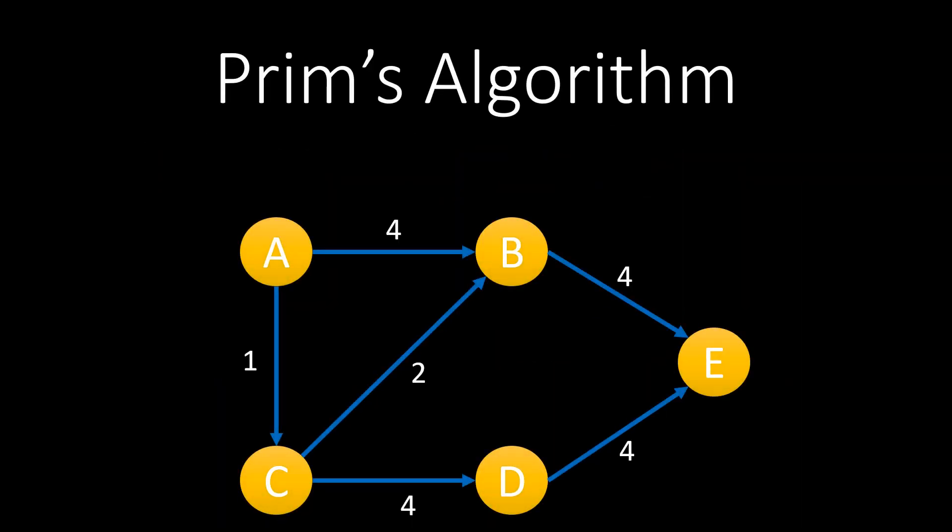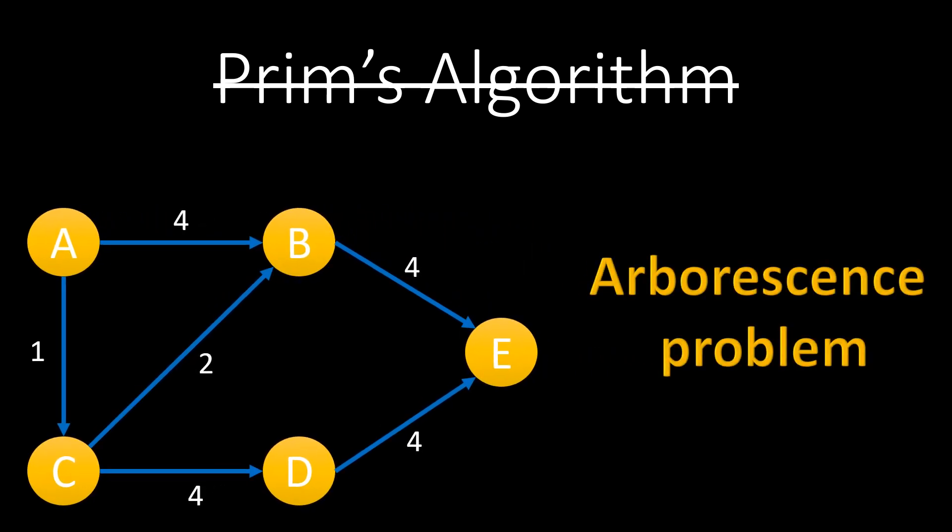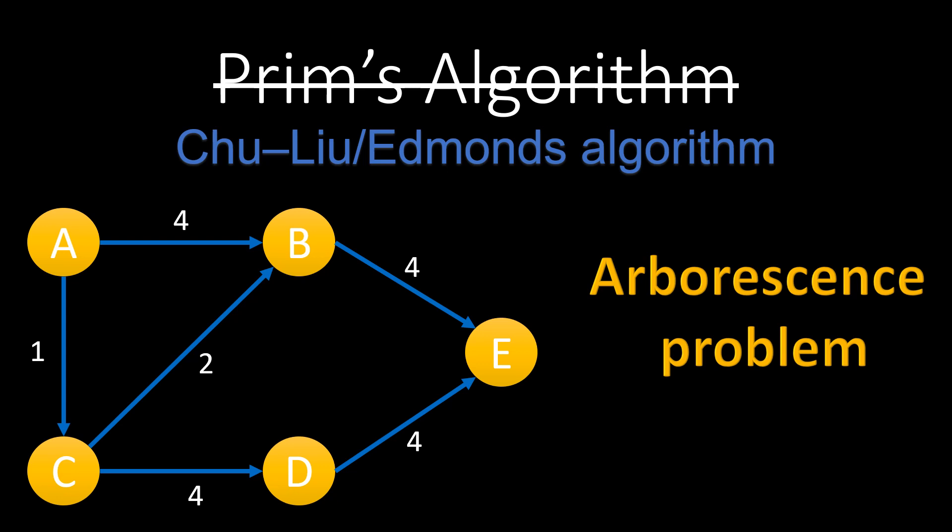At the start of the video, we talked about how different it is to find the minimum spanning tree in a directed graph. Now, it's time to talk about it. We cannot find a minimum spanning tree of a directed graph using Prims or even Kruskal's algorithm. This problem is called Arborescence problem and can be solved using Edmonds' algorithm. That's something for now you to explore.